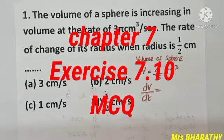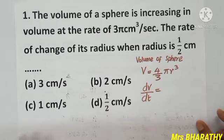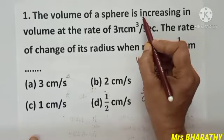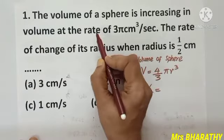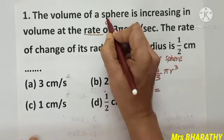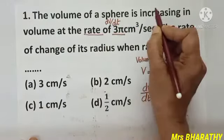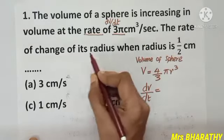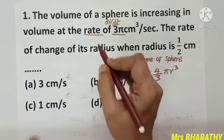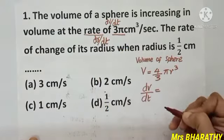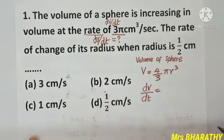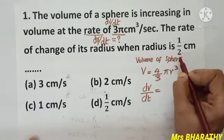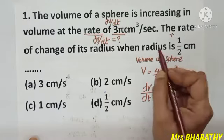Good morning children, we proceed to exercise 7.10 objective type questions in the chapter Applications of Differential Calculus. Question number one: the volume of a sphere is increasing in volume. The moment I read 'increase in volume at the rate,' this represents dv/dt. The rate of change of radius tells me dr/dt, which we need to find when radius is half a centimeter.